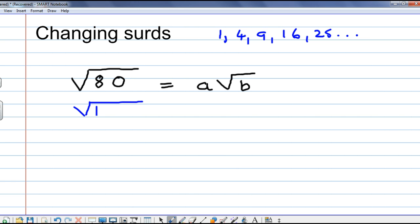So, 80 can be written as 16 times 5. I decompose it. That's the square root of 16 times the square root of 5. That's a square number. The square root of 16 is 4. So, the square root of 80 is 4 times the root of 5. So, in this instance, a is 4, and b is 5.